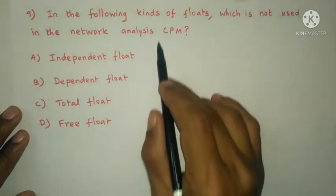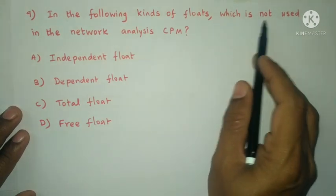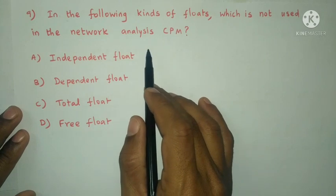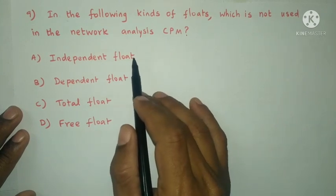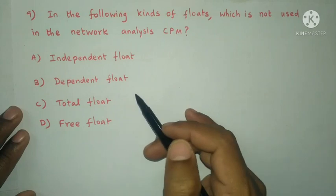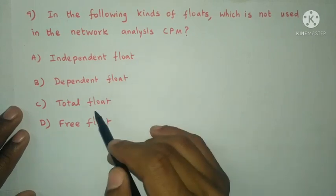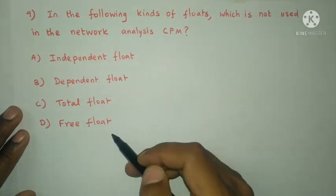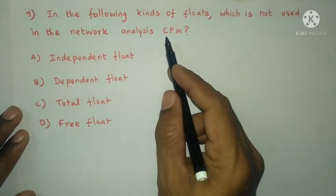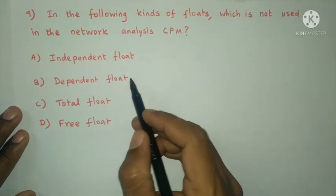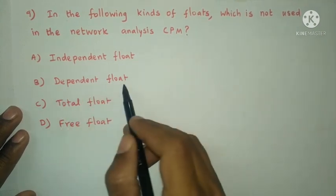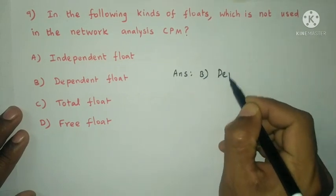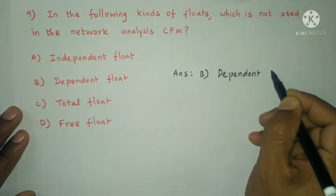Next question: In the following kinds of floats, which is not used in network analysis under CPM (Critical Path Method)? The options are: independent float, dependent float, total float, and free float. The answer is option B, dependent float, which is not used in network analysis.